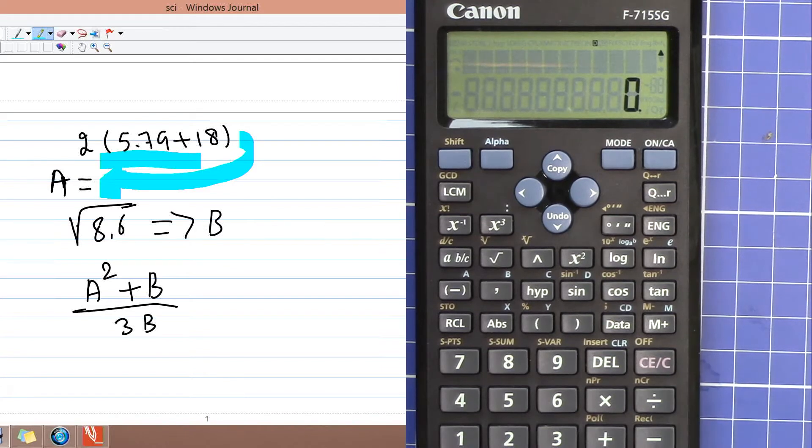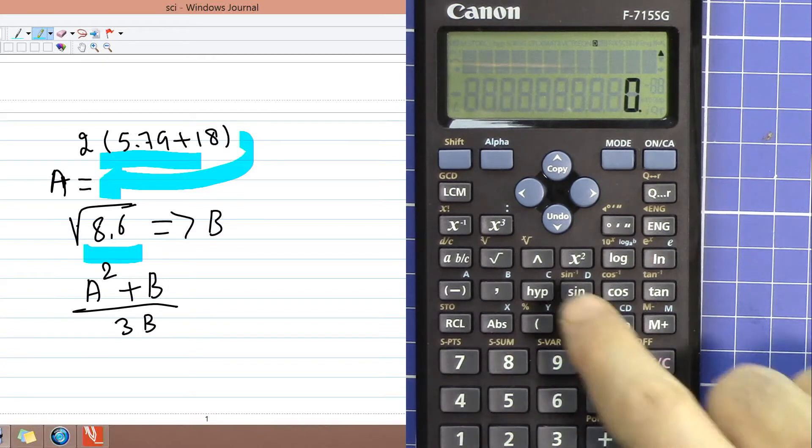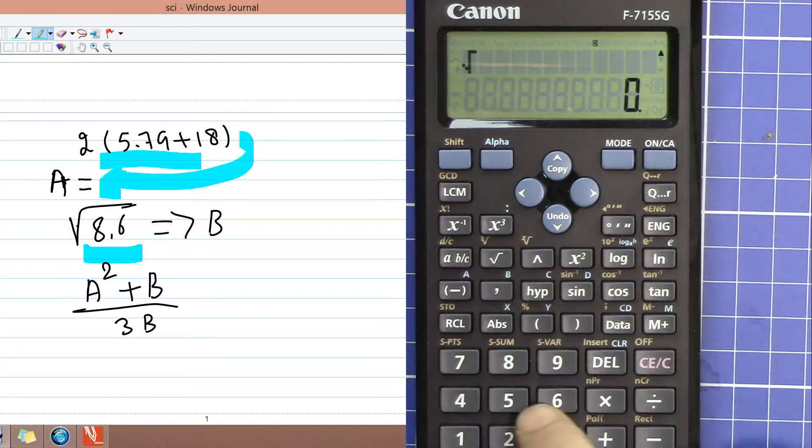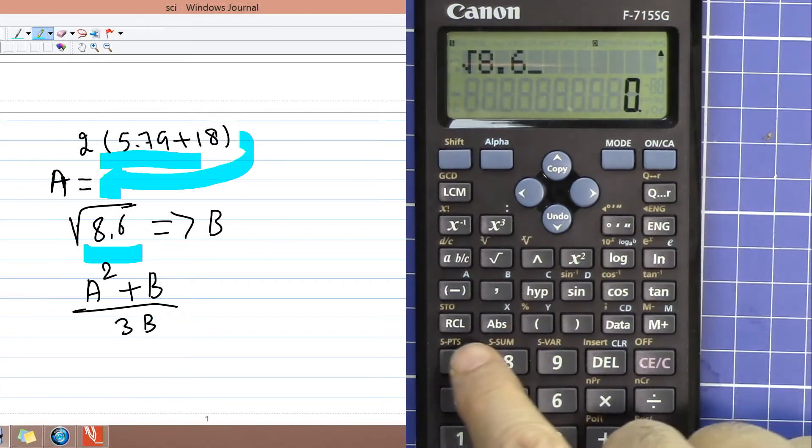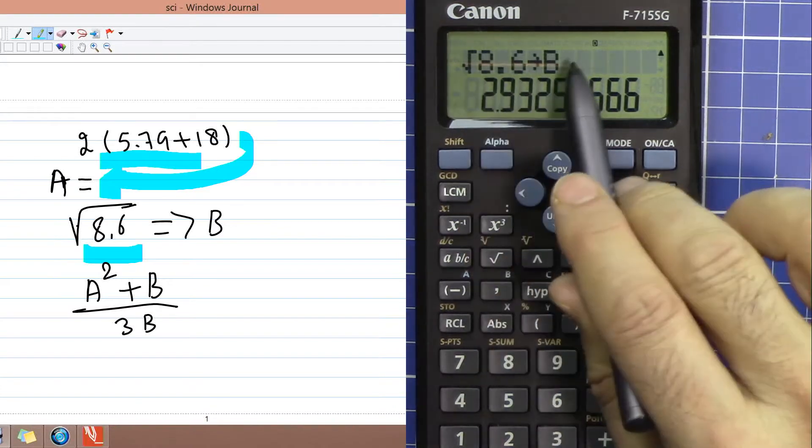Now let's do this one: square root of 8.6, and this should go into B. So 8.6, and then shift, store, and then this time we want to go to B. So now the result is 2.93 and it goes to B.